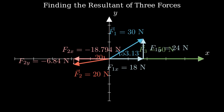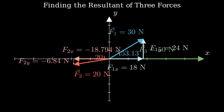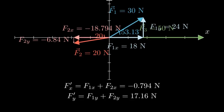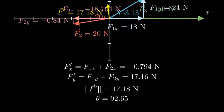Now we can find f prime by adding the components. The x component of f prime is negative 0.794 newtons. The y component is 17.16 newtons. This gives us a resultant f prime with magnitude 17.18 newtons at 92.65 degrees.